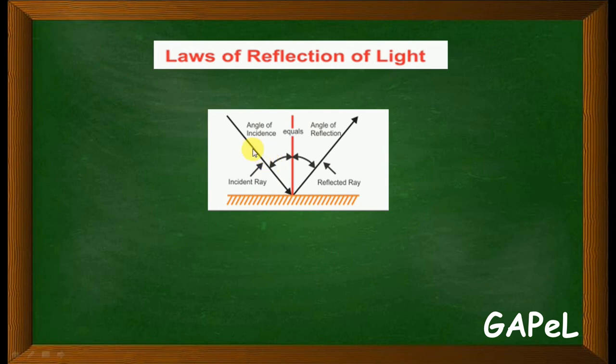The incident ray - I am defining the law now. The incident ray, the reflected ray, and the normal to the mirror at the point of incidence all lie in the same plane. All these three rays lie in the same plane. So what is the first law? The incident ray, the reflected ray, and the normal to the mirror at the point of incidence all lie in the same plane. Understood?